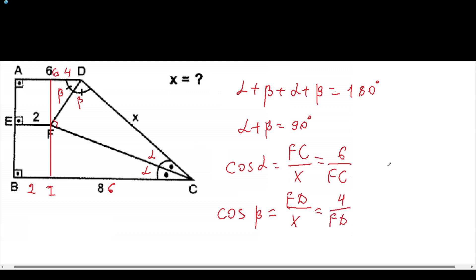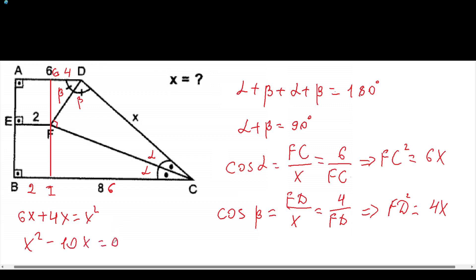And here, FC squared will be equal to 6x and the FD squared will be equal to 4x times FC. And now we can use the Pythagorean theorem and 6x plus 4x will be equal to x squared. FC squared minus 10x, x will be equal to 0.